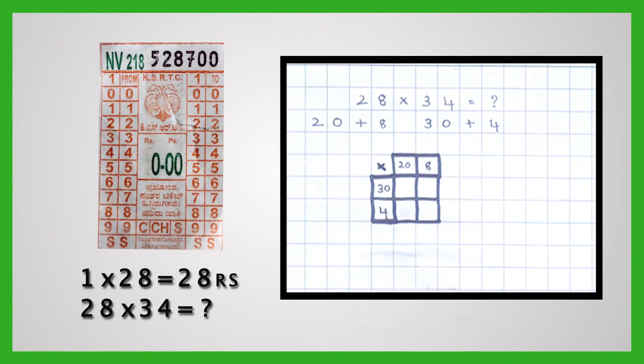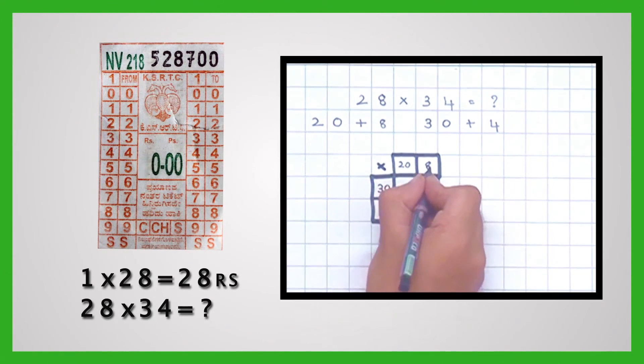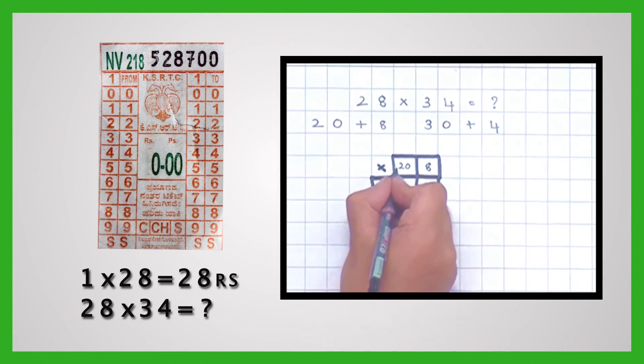4 multiplied by 8 is 32. 4 multiplied by 20 is 80. Next, 30 multiplied by 8 is 240.